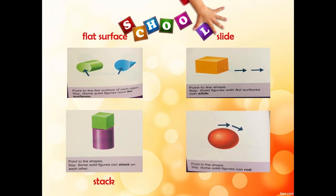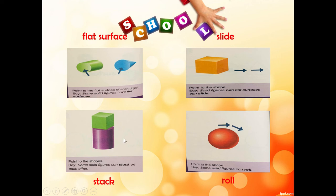Next one is roll. This solid figure — this sphere can roll. Roll means it can turn over and over and over again. Again, what word is this? Roll. Very good KG. So again, this is flat surface. This one, it can slide. This — stack. And this one, roll.